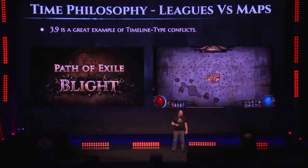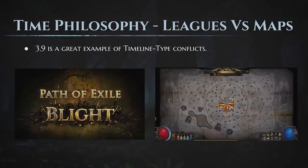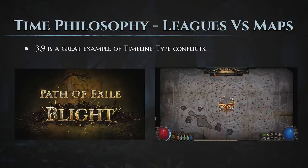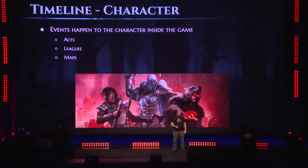To explain leagues versus maps, 3.9 is a great example of timeline-type conflicts. When did Blight League happen now that it's going to be over for 3.9? Never on the character timeline — Blight League is another timeline entirely. When did Zana's storyline occur now that we're going to see a new map endgame? Her storyline occurred in the past on the player timeline because you remember that. Now there's a new alternate version in the past on the character timeline as well, where other exiles helped her. For Metamorph League, Tane's story is happening now on the character timeline. But when is the new Atlas story happening? Now on the player timeline because it's new to you — the new map system is happening on the player timeline.